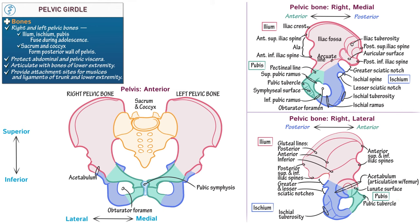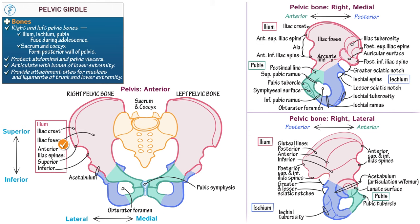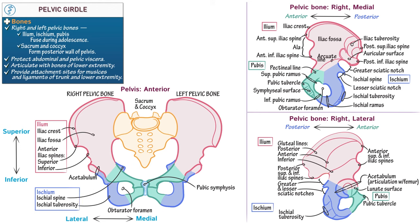Now let's return to our anterior diagram to label some key features. Indicate the ilium and label the iliac crest, iliac fossa, and anterior superior and inferior iliac spines. Show the ischium and label the ischial spines, which project inferomedially, and the ischial tuberosity. Inflammation of the ischial tuberosity and the muscles that attach to it — namely the hamstrings — causes pain in the buttocks, especially when sitting.